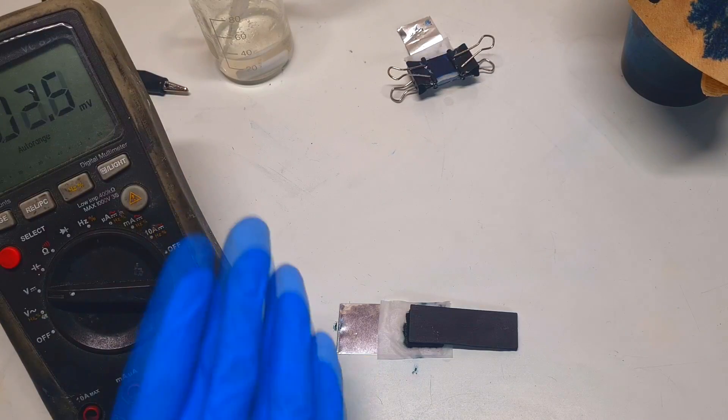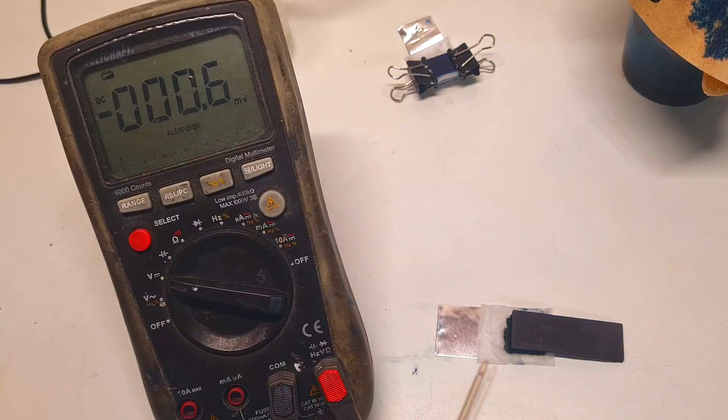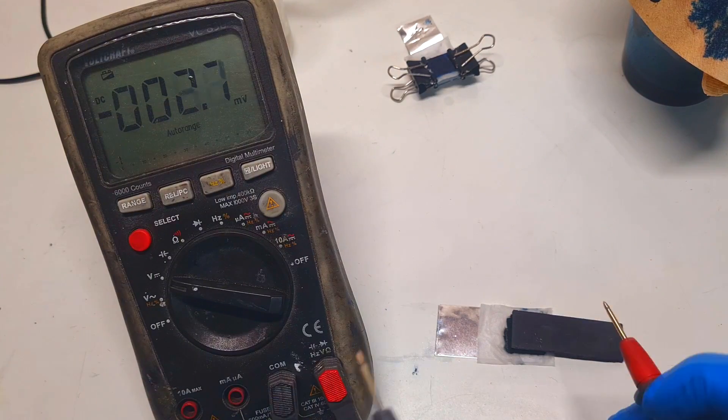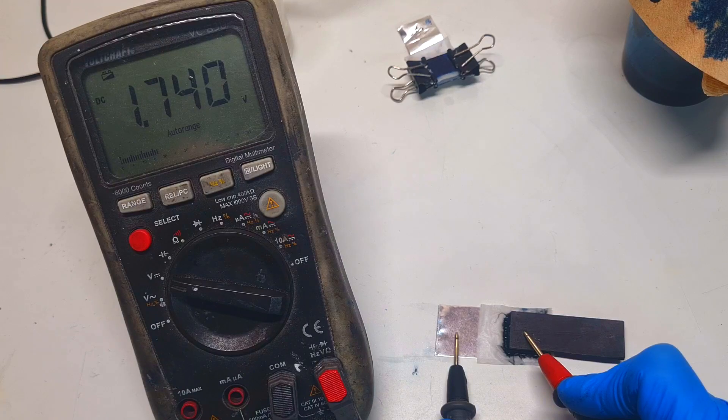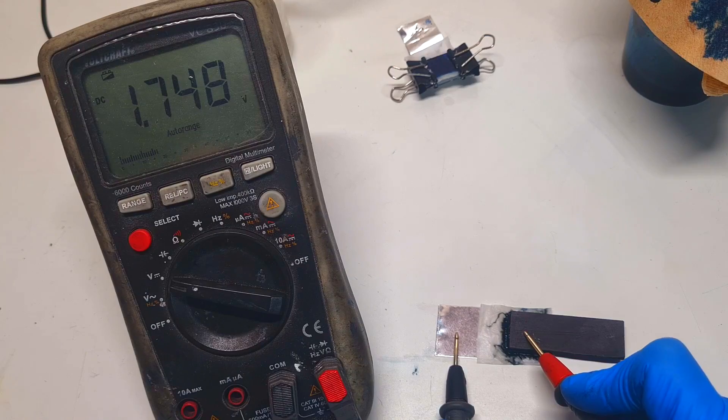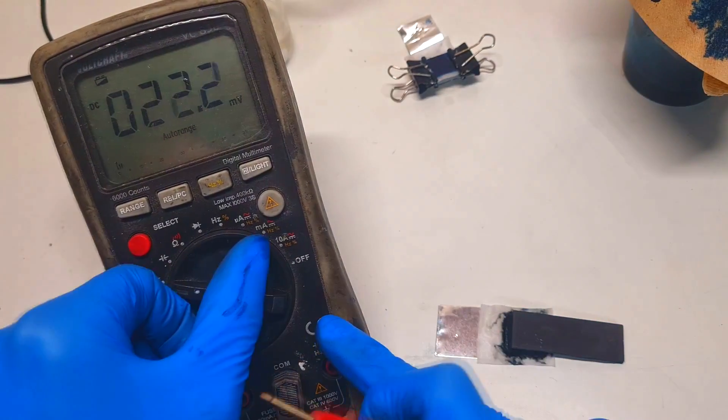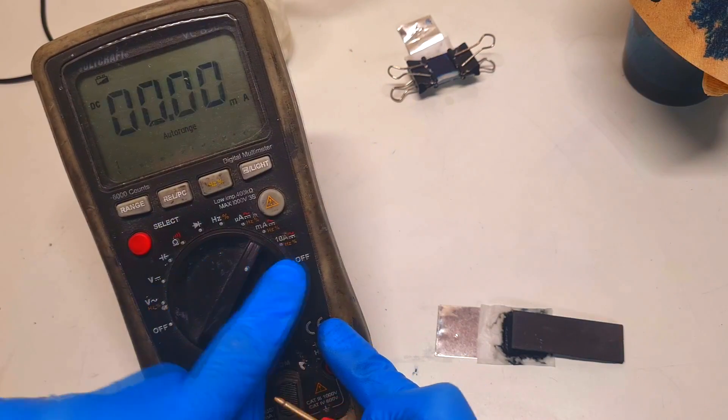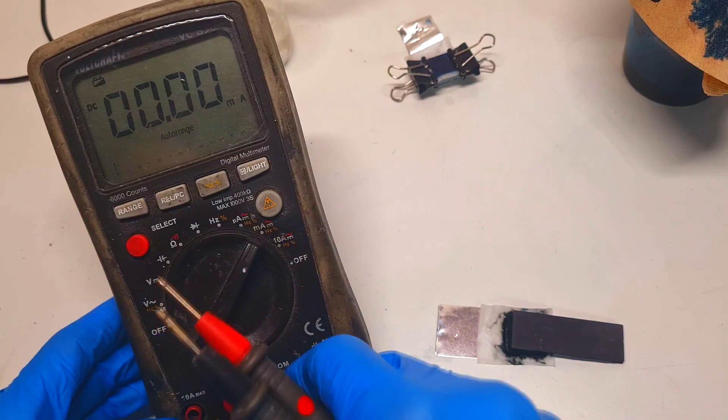And now I will measure the voltage of the cell, and I get 1.7 volts, which is really good. And now I will also measure the current, and here I have the multimeter set on milliamps.